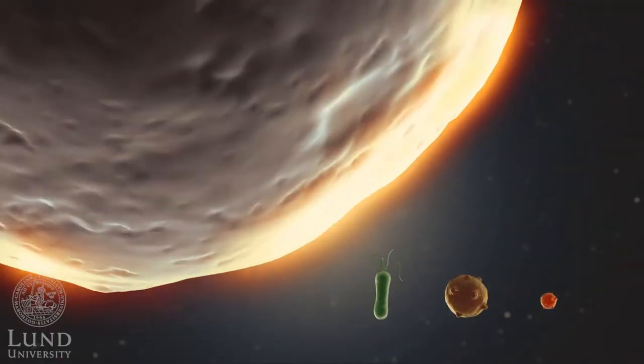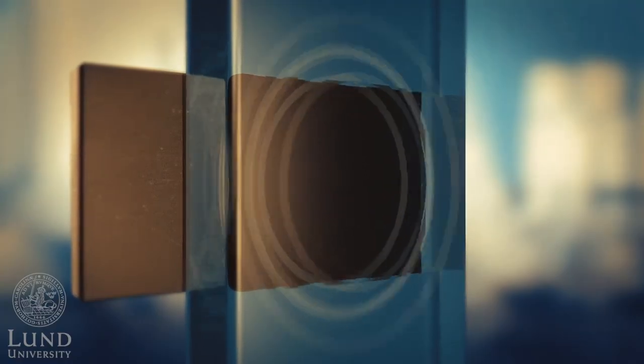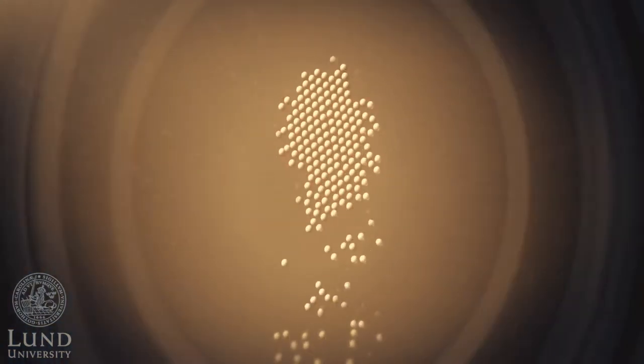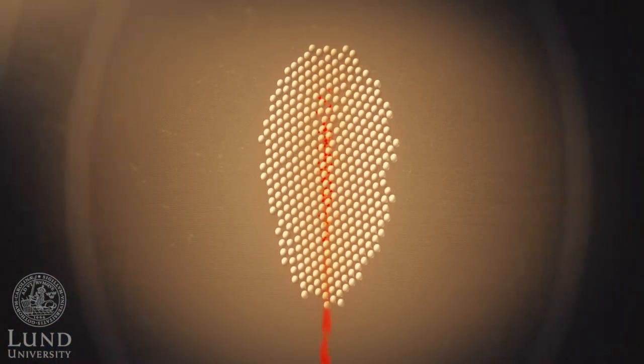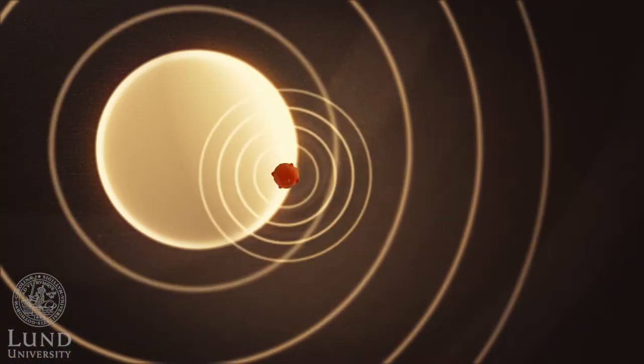Smaller particles such as bacteria, microvesicles, and exosomes can't be trapped directly in the acoustic trap. But by first loading the trap with larger seed particles, smaller particles can also be trapped when interacting with the larger seed particles.